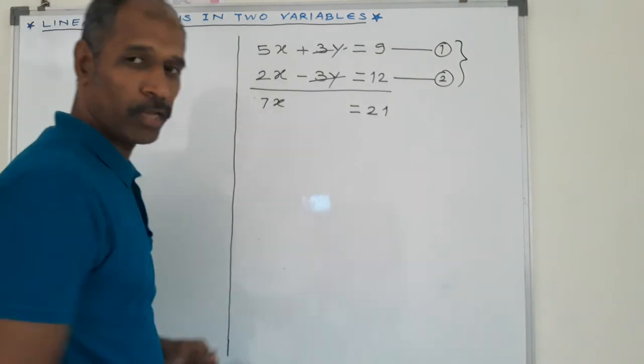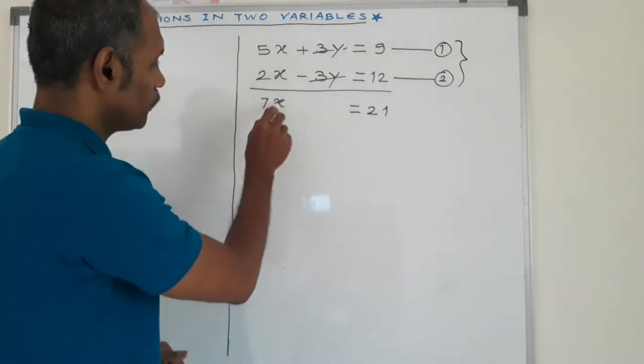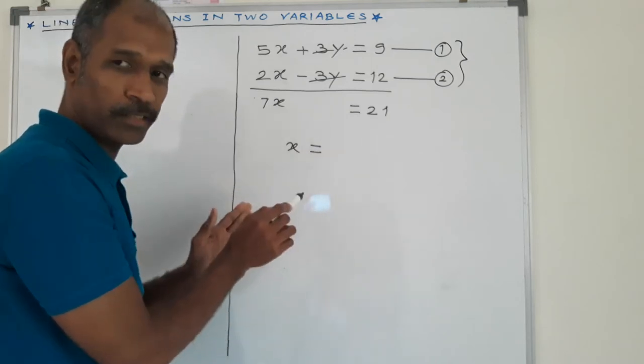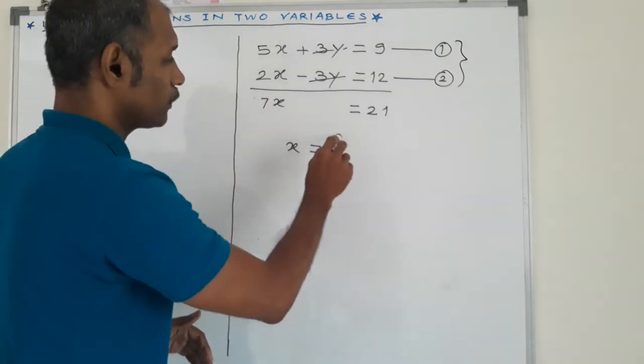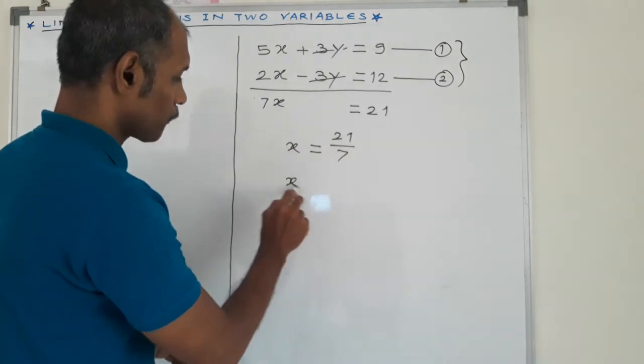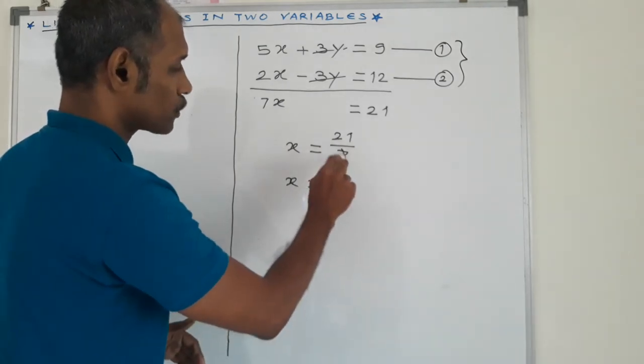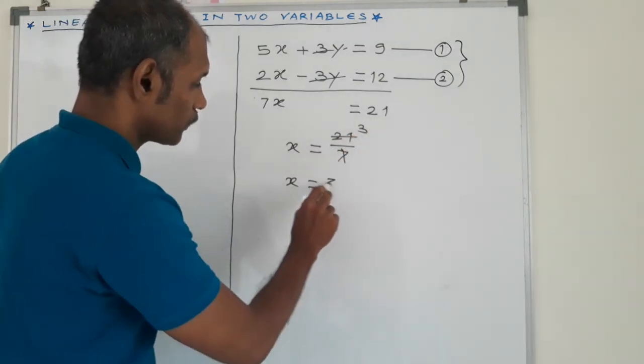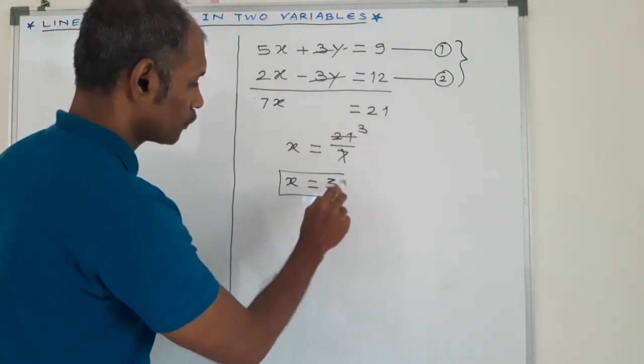Here we want the value of variable x. Therefore, we keep this at the left side and take this 7 to the right side. Now, x is equal to 21 divided by 7. Therefore, x is equal to 3.